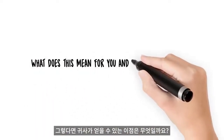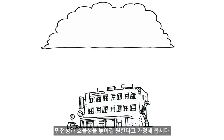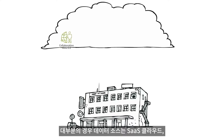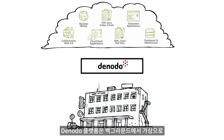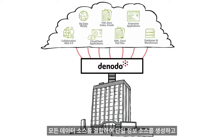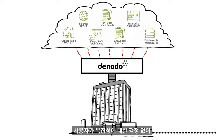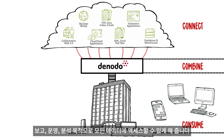What does this mean for you and your organisation? Let's say your organisation wants to modernise your IT infrastructure to make it more agile and efficient by moving to the cloud. Most probably you have multiple data sources in SaaS Cloud, big data clusters, on-premise enterprise apps, MDM systems, web and social media. Denodo Platform will work in the background to virtually combine all your data sources to create a single source of truth, and enable your users to access any data for reporting, operational and analytical purposes without worrying about the underlying complexity.